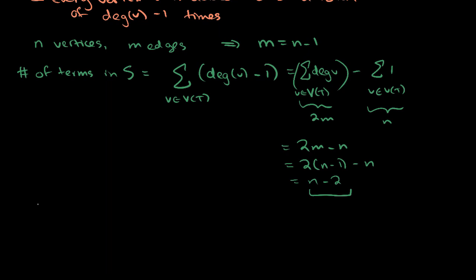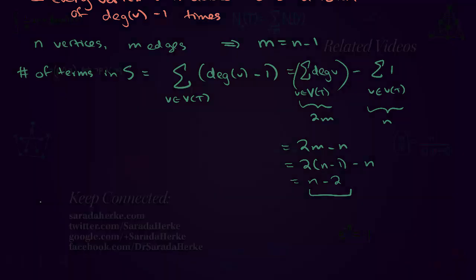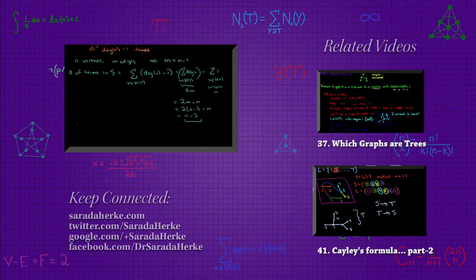In the next video, what I'm going to do is show you the exact opposite. How to go from a Prüfer sequence to a labeled tree.